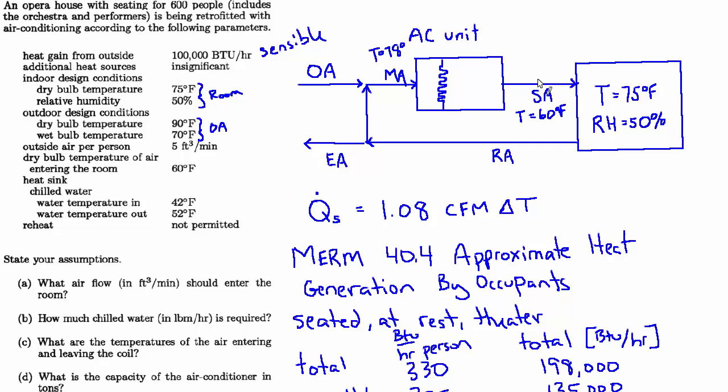And the reason why is because our sensible heat ratio was 0.79. So that means there is a significant amount of latent load, not so significant that it's below the 0.7 mark, and we have to take latent cooling into special consideration. But enough that there is humidity to be removed.